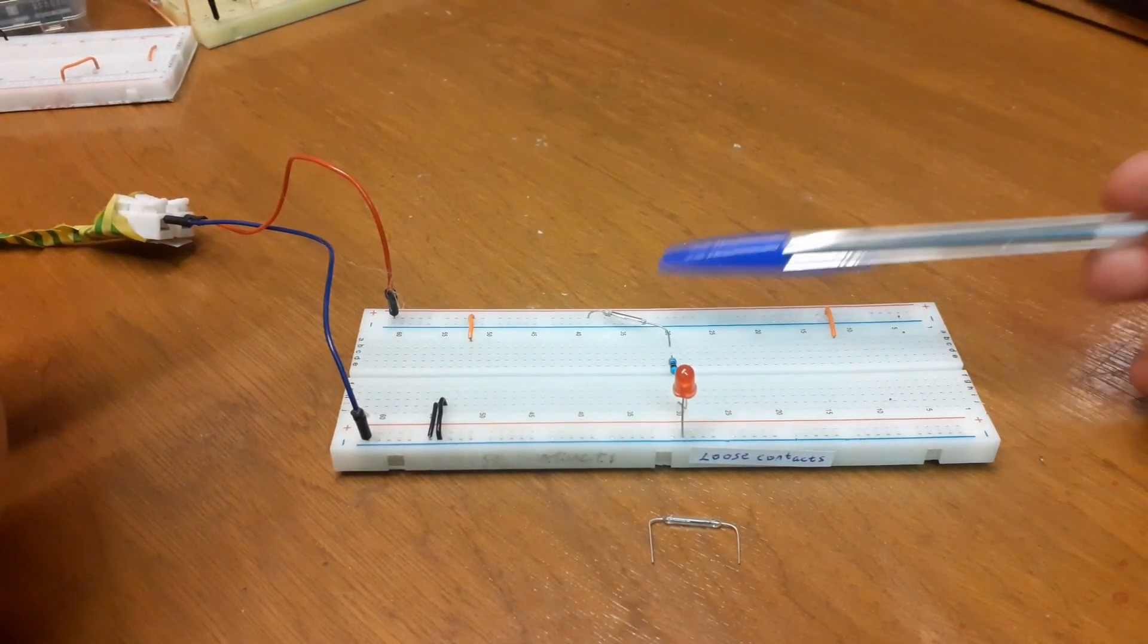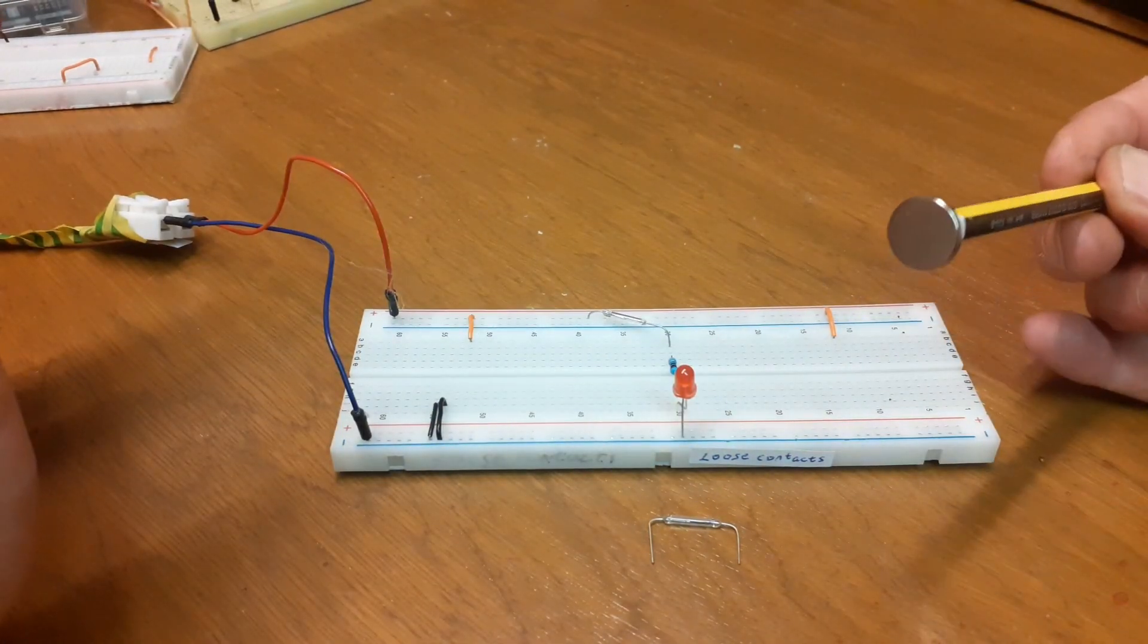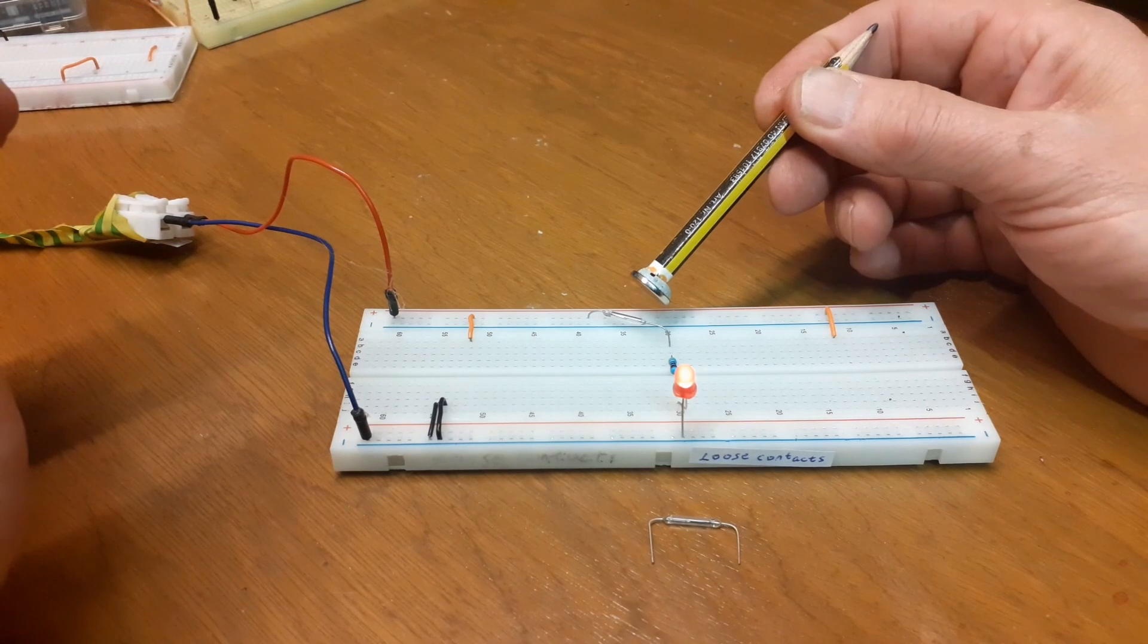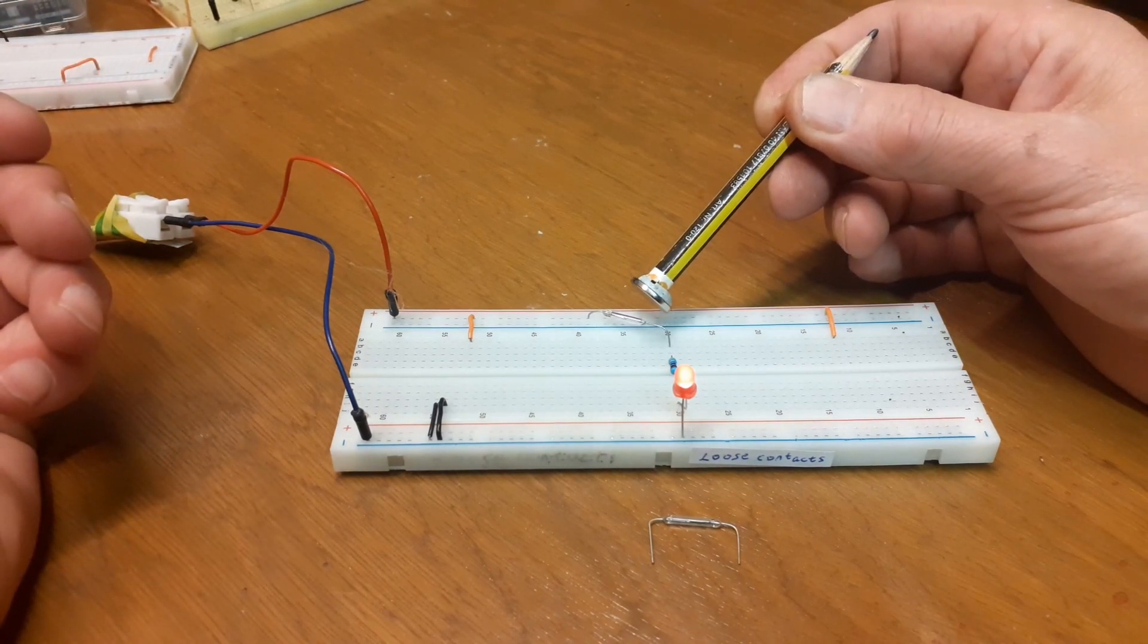Down through here there's a reed switch. We bring our magnet that's on the end of this pencil over the reed switch and it closes and turns on. Take it away.